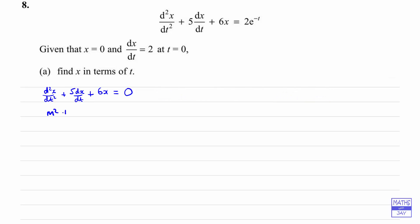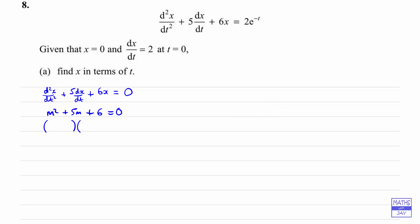So that's going to be m squared plus 5m plus 6 equals zero, and we're going to use the solutions to this equation to solve the complementary equation. We can see that this can be factorized. To get a product of 6 and a sum of 5 we must have 2 and 3, so we've got that m is either going to be minus 2 or minus 3. So we've got real distinct roots.